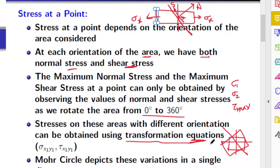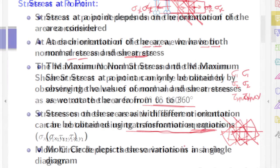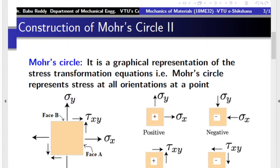Instead of finding normal and shear stresses at each orientation mathematically, which would be tedious, Mohr's circle gives you a complete picture of the values of normal and shear stresses at each orientation when the element is rotated. Mohr's circle is a pictorial representation of the variation of normal and shear stress at a point. All values obtained by varying the element from 0 to 360 degrees are represented in a single picture. Mohr's circle is a graphical representation of the stress transformation equations and represents stress at all orientations at a point.